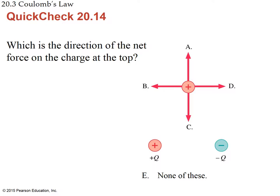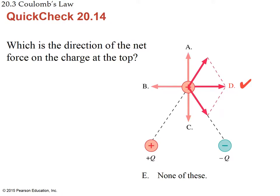Similar question: what is the direction of the net force on the charge at the top, given three charges? The bottom-left charge produces a repulsive force pushing the top charge up and to the right. The bottom-right charge produces an attractive force pulling it down and to the right. These two forces are equal in magnitude (same charge values, same distances), so their vertical components cancel and the net force points purely to the right — answer D.